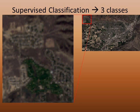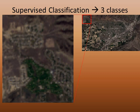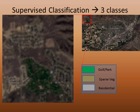In supervised classification, pixels are classified based on a training sample created by the user. We'll remove the grid to make the point that supervised classification starts with features and landscapes the user is interested in identifying — in other words, categories that already have meaning to the user. We'll start with the creation of a training sample: a series of polygons used by remote sensing software to classify pixels in a scene into categories identified by the user. From our previous encounter with unsupervised classification, we know the surfaces in this area are golf parks, sparse vegetation, and residential.